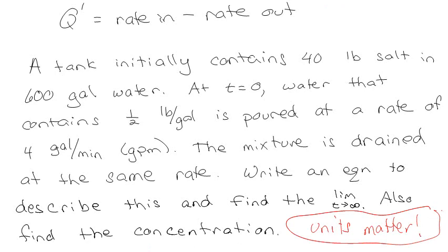Whenever you have a rate and you're looking at salt — we're specifically looking at how much salt is in the mixture at any given time — so we're looking at d(salt)/d(time). That means the rate in and the rate out both have to be in units of pounds per minute, because our d(salt)/d(time) would be pounds per minute.